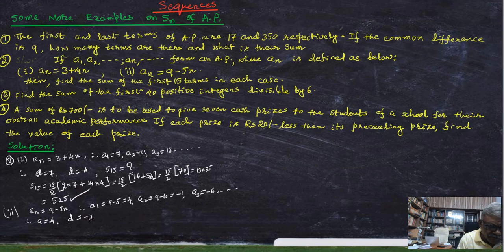And therefore, S_15 equal to 15 by 2, 2 into first term that is 4, plus 14 into minus 5. And this is 15 by 2 into minus 62.